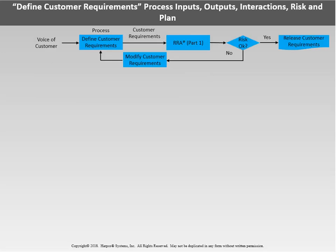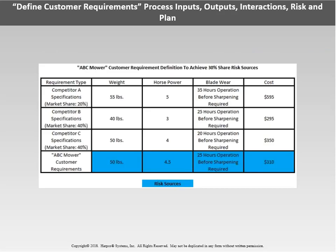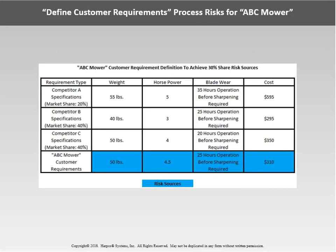Looking at the first process — defining customer requirements — we have a voice of the customer to capture. The question is: did we capture them correctly? In 30 years, one of the things companies do least well is getting the customer requirements right and transferring those to design requirements. To illustrate this risk, we'll take the perspective of a new lawnmower company — the ABC mower — examining three main competitors to understand market positioning.